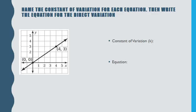So we want to name the constant of variation for each equation, and then write the equation for the direct variation. So remember, our constant of variation is k, or it is a slope. So if I look at this, the nice thing is my point is always (0, 0). So my rise is 3 and my run is 4. So it's always going to be our y value of another point on the line over the x value. So in this case, k is going to be equal to 3/4.